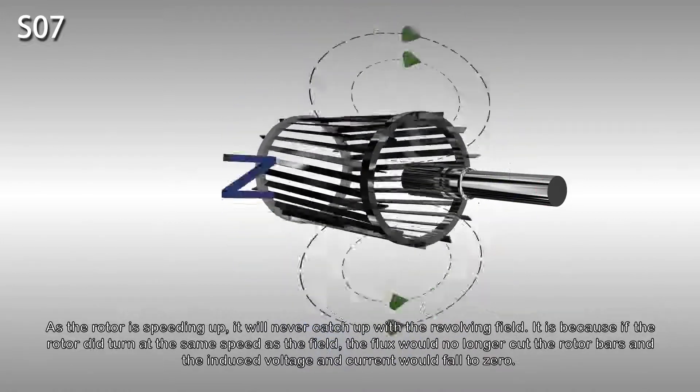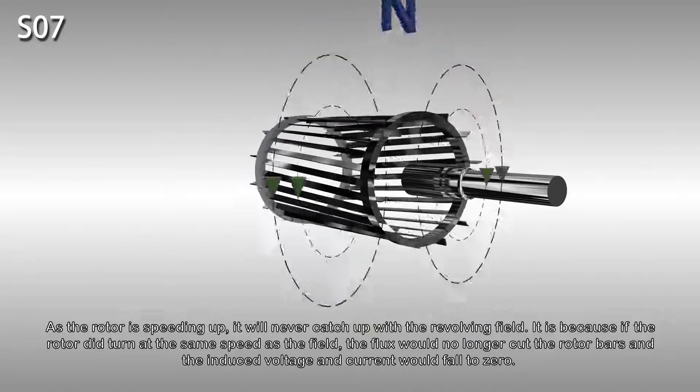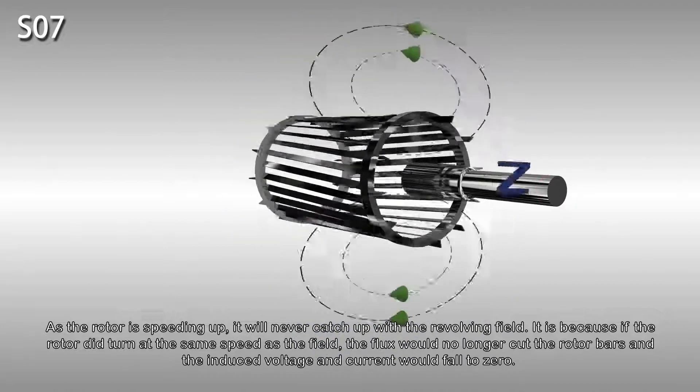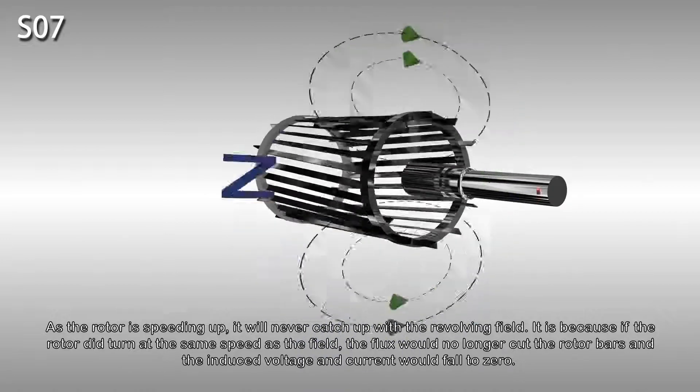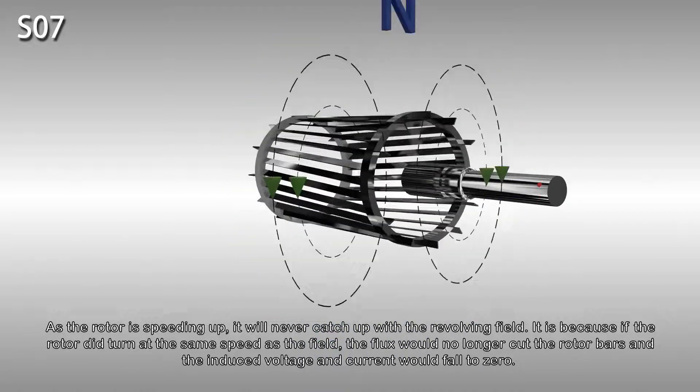As the rotor speeds up, it never manages to catch up with the revolving field. If the rotor did turn at the same speed as the field, the flux would no longer cut the rotor bars and the induced voltage and current would fall to zero.